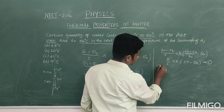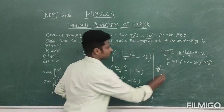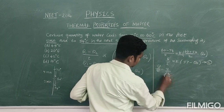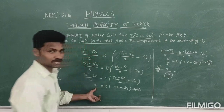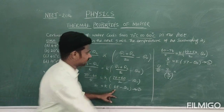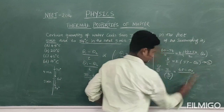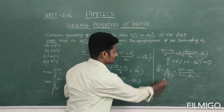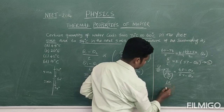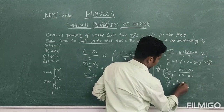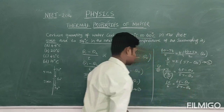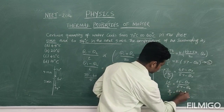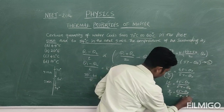Now we divide equation 1 by equation 2. On the left side: 2 divided by 6/5 gives 5/3. Since K is a constant, it cancels from both equations. So we get: 5/3 = (65 − θ₀) / (57 − θ₀).